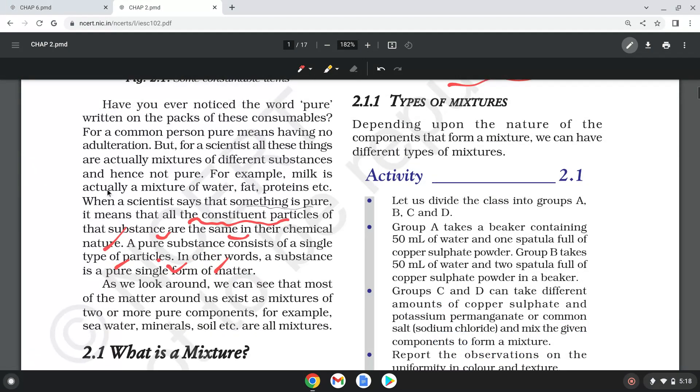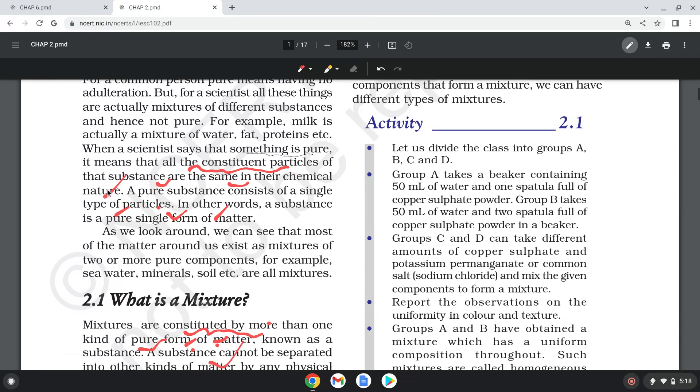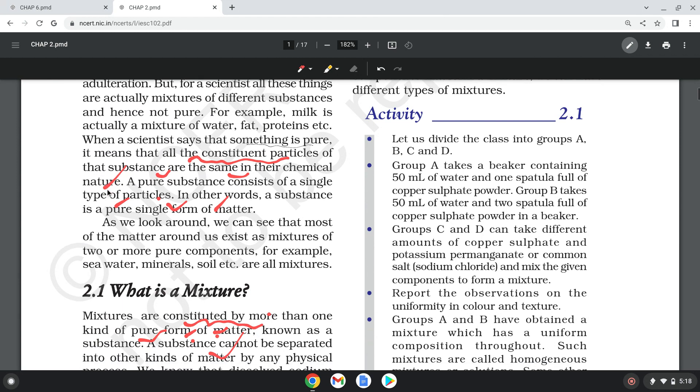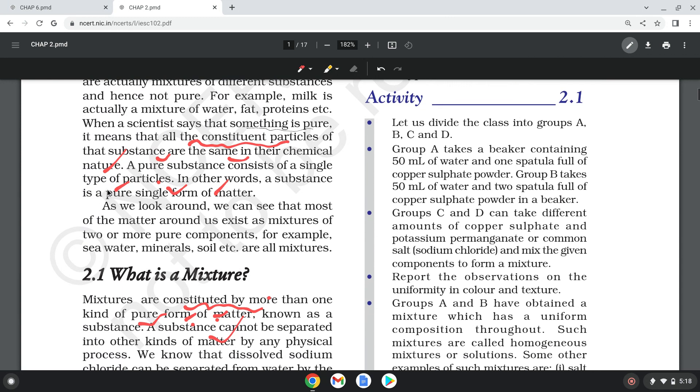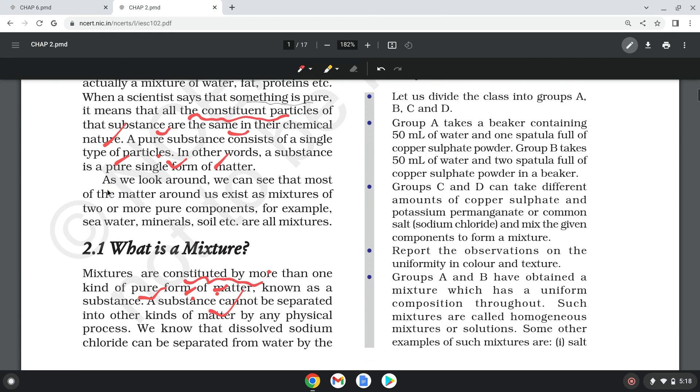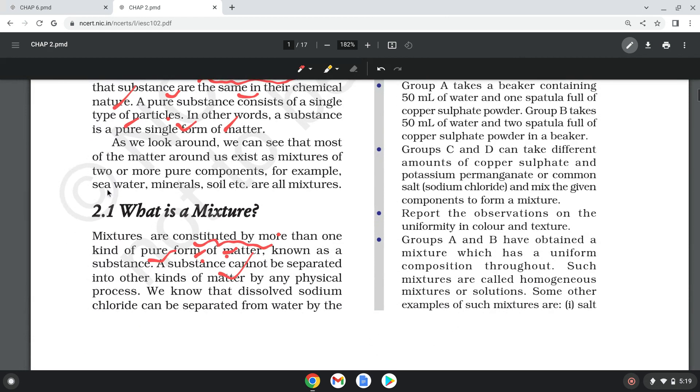Activity 2.1: Depending upon the nature of the components that form a mixture, let us divide the class into groups. Group A, B take 50 ml of water and one spatula full of copper sulfate powder in a beaker. Groups C and D contain different amounts of copper, potassium permanganate, common salt sodium chloride in a mixture. Observe the color and texture.